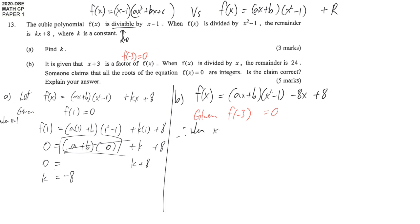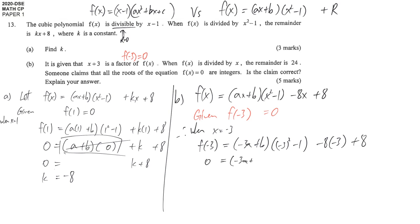We substitute x equals negative 3: f(negative 3) equals (negative 3a plus b)(negative 3 squared minus 1) plus (negative 8 times negative 3 plus 8). After simplifying carefully and dividing both sides by 8, we get: negative 3a plus b equals negative 4.